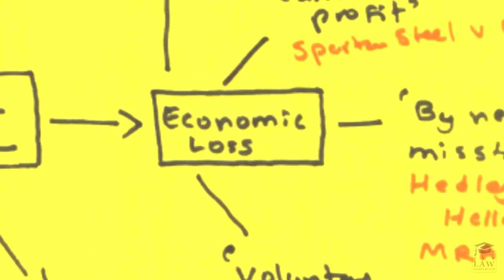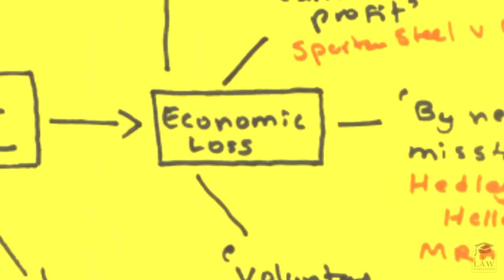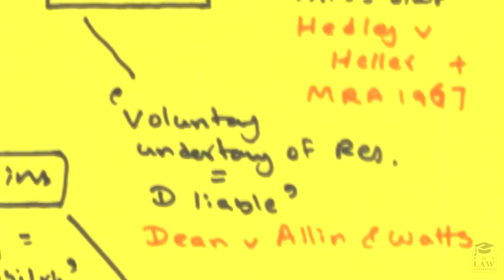Besides the physical injury, the psychiatric injury, another crucial element within the duty of care is where damage is caused due to economic loss. Once again, if there is a voluntary undertaking of responsibility, the defendant would be liable as held in Dean v Allin and Watts. What this states or what this stipulates is where in general there might not be a liability, but if there is voluntarily, in the premise of two or more parties, responsibility is undertaken, as in let me handle this for instance, the defendant will be liable.